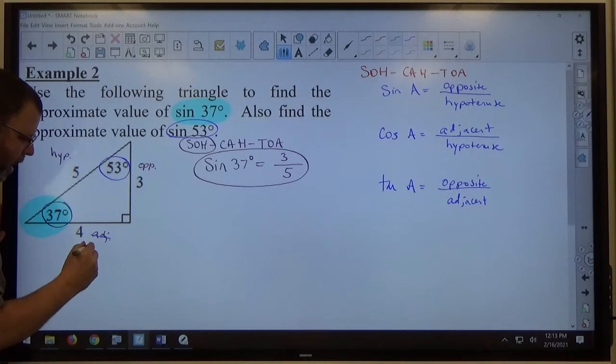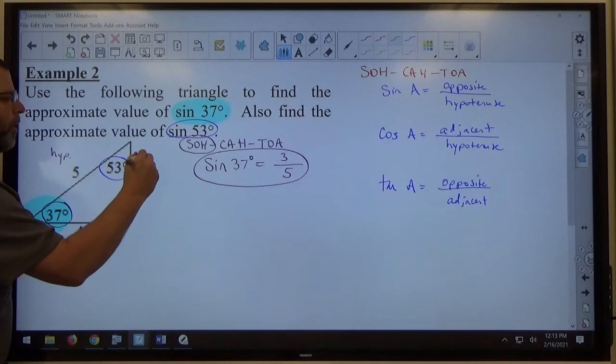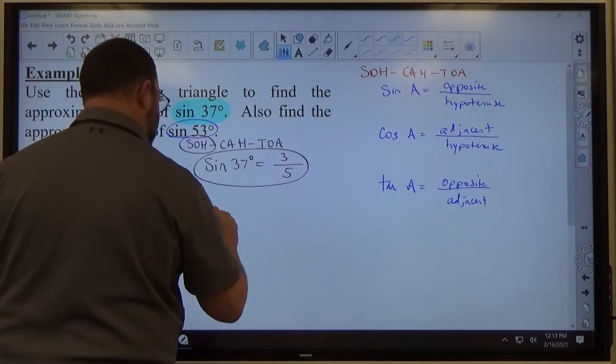The hypotenuse is the same hypotenuse every time, but the opposite adjacent switch by which angles. So now I'm going to have opposite is 4, adjacent must be 3 because the hypotenuse is 5. Once again, I'm working with SOHCAHTOA, so if I want to do sine of 53 degrees.